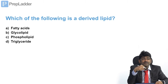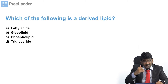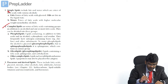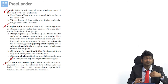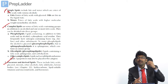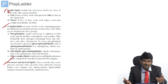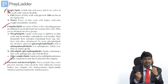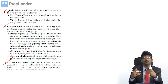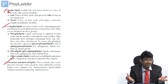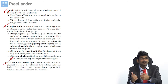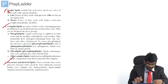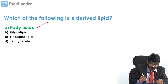Which of the following is a derived lipid? For this you should know the classification of lipids given in Harper: simple, complex, and derived lipids. Derived lipids are also known as precursor lipids. When you hydrolyze triglyceride, you get fatty acids and glycerol. These are considered derived or precursor lipids because they can produce triglyceride. They are precursors in one sense, and derived lipids in another sense because they are derived from triglycerides. That is why the answer is fatty acid.